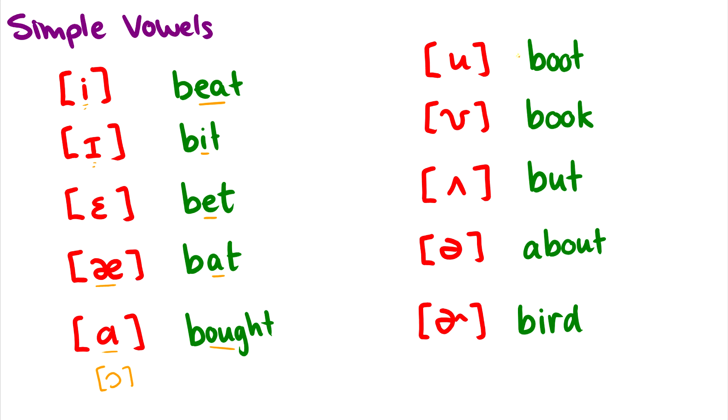In boot, you have the oo. In book, you have uh. Notice they're spelled with the same letters in boot and book, but they make different sounds. In but, you have this uh sound.